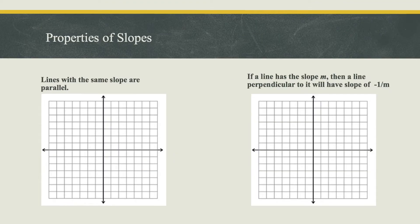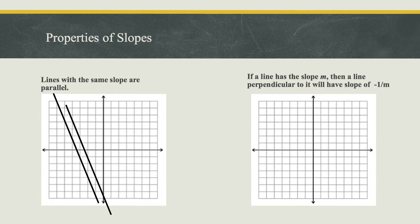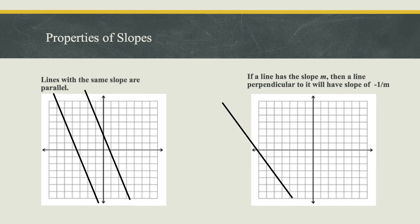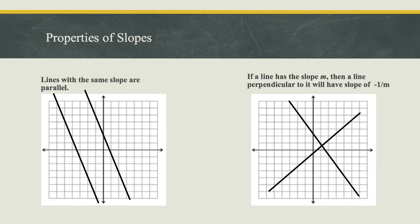Some other properties of slopes: lines with the same slope are parallel. Also, if I have a line with a slope of m, a line that is perpendicular to it is going to have a slope of negative 1 over m, so that the product of their two slopes is negative 1.